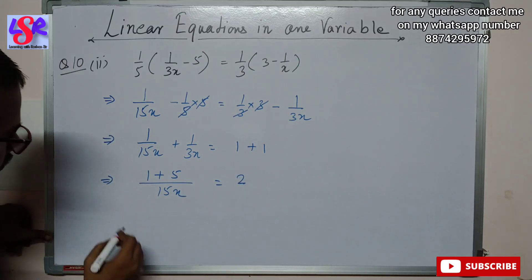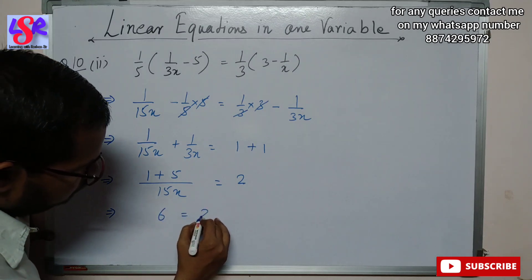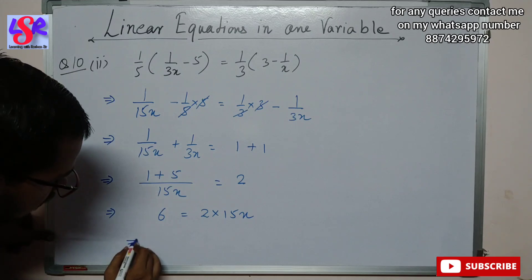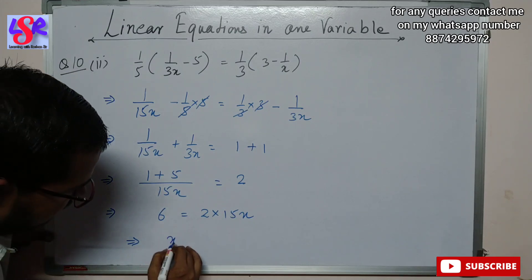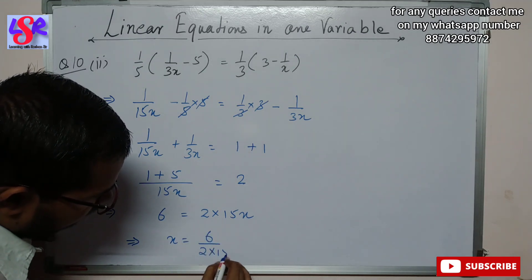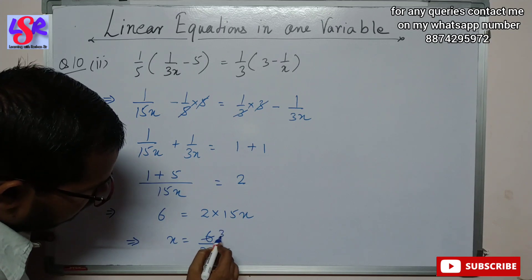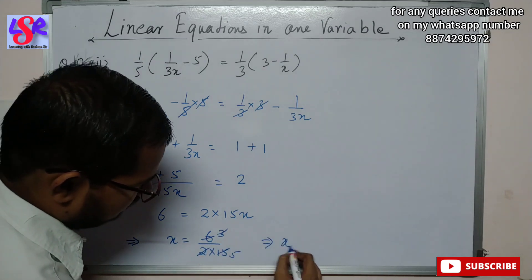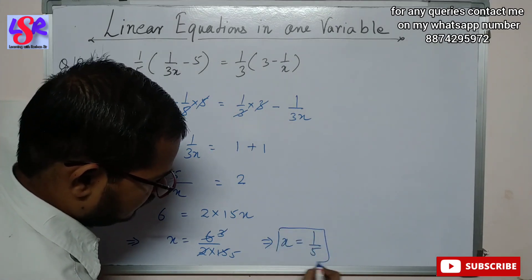Cross multiplying: 6 = 2 × 15x. Transposing: x = 6/(2 × 15). Cancelling 2 and 30 gives x = 1/5 as the answer.